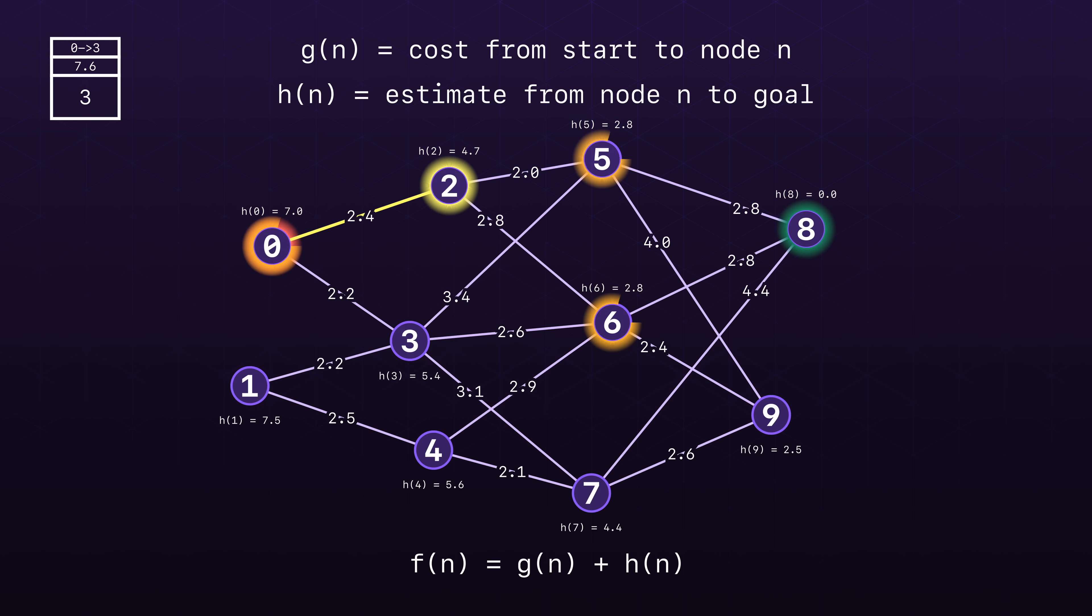Upon removing node 2, we add its neighbors. Notably, node 5 rises to the top of the queue due to its heuristic of 2.8. Adding the distance traveled so far, 4.4, gives us a total of 7.2.